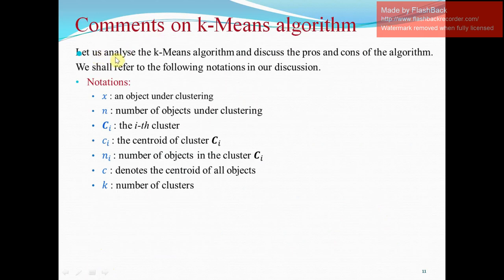Here the dimensions we have used are X is an object under clustering and N is the number of objects under clustering. CI is the ith cluster. ci in small case is the centroid of cluster CI. NI is the number of objects in the cluster CI. C denotes the centroid of all clusters. K is the number of clusters.